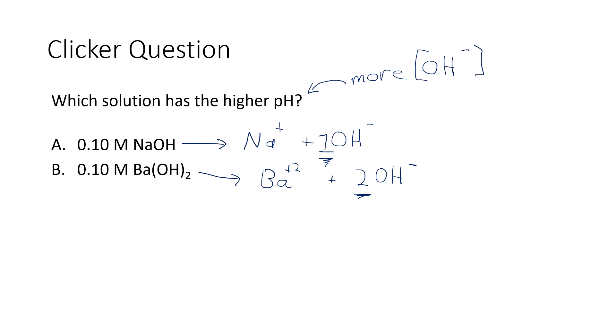We're going to get twice as much hydroxide from barium hydroxide as we do from sodium hydroxide, and so that will make barium hydroxide have a higher pH than sodium hydroxide.